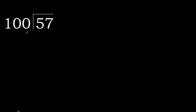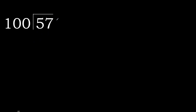57 divided by 100. 5 is less, therefore next. 57 is less, therefore next. There is no number, therefore complete — always complete with 0.